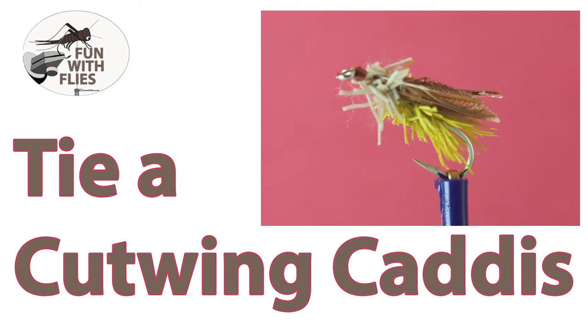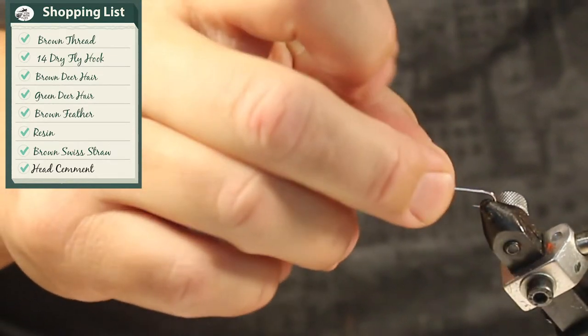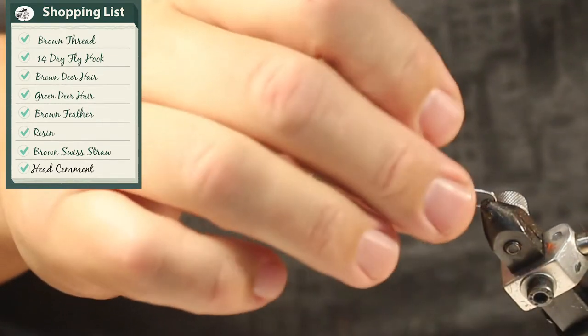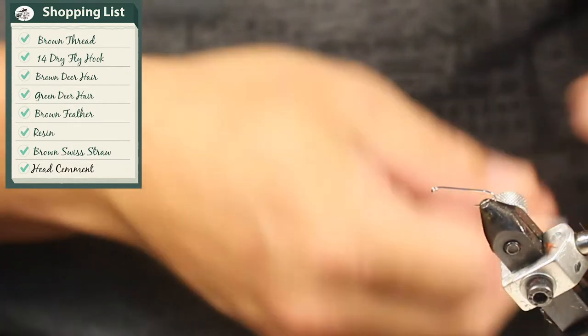Hi, this is George with Funnel Flies. Today we're going to be tying a cut wing caddis. I went ahead and mounted a number 10 dry fly hook on here. I'm doing a little larger than I normally do. Normally I'm doing like a 14 or 16, but I wanted to do a couple larger ones.